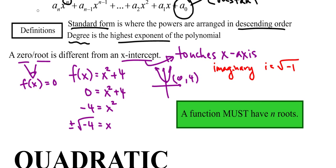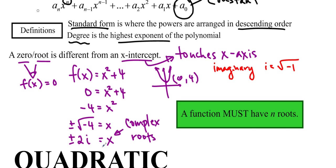So this is plus or minus the square root of 4, which is 2, times the square root of negative 1, which is i. So these are the roots of the function — they are called complex roots. We have plus 2i and minus 2i, so there are two of them. And whatever the degree is — here the degree is 2 — we have to have that many roots. So a function must have n roots. If the degree is 2, then I have to have two roots, and they could be complex or they could be real. It depends on the function.